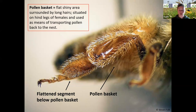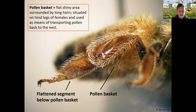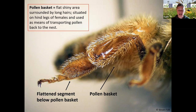The pollen basket is a flat shiny area surrounded by long hairs known as corbicular hairs, and it's simply a means of transporting pollen back to the nest. Honeybees also have a flattened segment below the pollen basket which no other bees have — another good feature to differentiate honeybees from large solitary bees. So they have the combination of the pollen basket and the flattened segment on their hind legs. Most bees in the UK actually carry pollen on furry brushes on the legs or underneath the body.